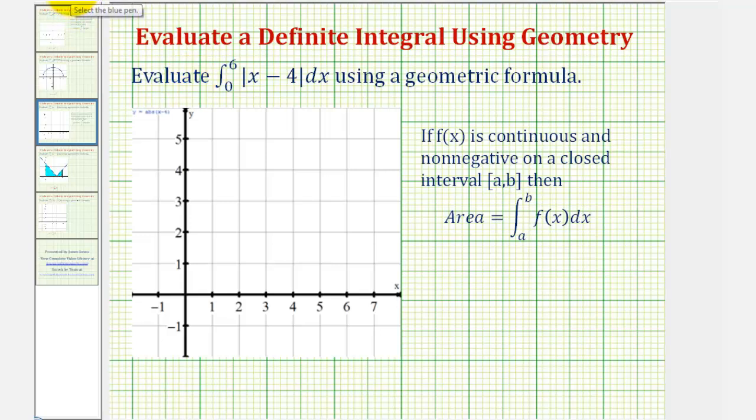Looking at our definite integral, the first thing we should recognize is that the closed interval would be from zero to six, given by the limits of integration, and that our function f(x) is equal to the absolute value of the quantity x minus four.